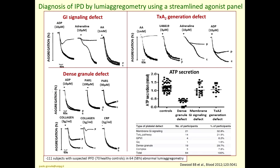Using this approach, Dawood and coworkers studied 110 subjects with suspected inherited platelet function disorder, of whom 64 were abnormal. Patients were clearly classified into groups: those with a defect in Gi signaling, those with a dense granule defect — the second most frequent group at around 30% of all cases — and those with a defect in thromboxane generation.